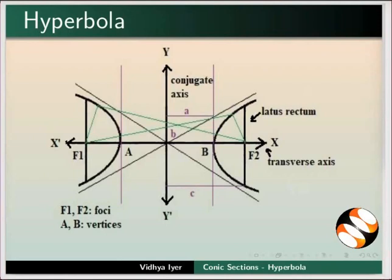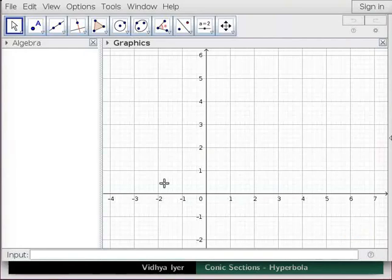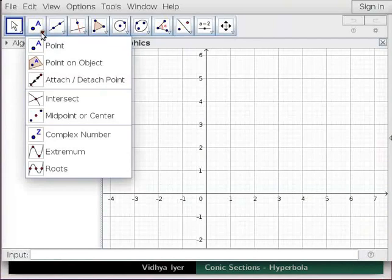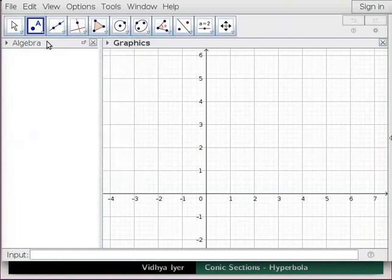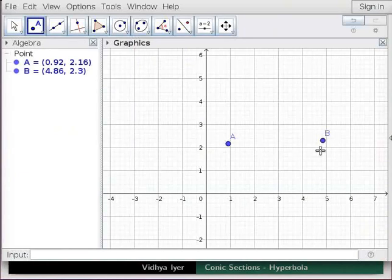Let us construct a hyperbola in GeoGebra. I have already opened the GeoGebra interface. Click on Point Tool and click twice in Graphics View. This creates two points A and B which will be the foci of our hyperbola.